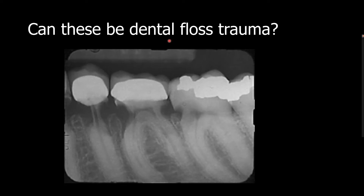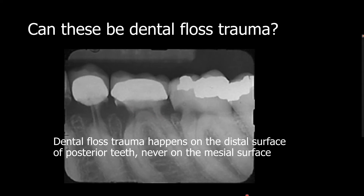Can these tooth structure losses be from aggressive use of dental floss? When you forcefully use dental floss, the distal surfaces of the teeth are damaged. There is no way you can put force on the mesial surface of the posterior teeth with dental floss.